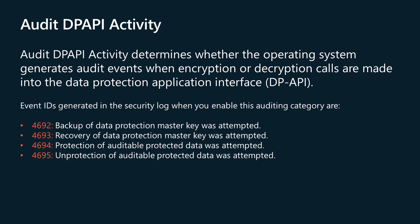Events in the security log related to this auditing item include: 4692 — Backup of Data Protection Master Key was attempted. 4693 — Recovery of Data Protection Master Key was attempted. 4694 — Protection of Auditable Protected Data was attempted. 4695 — Unprotection of Auditable Protected Data was attempted.